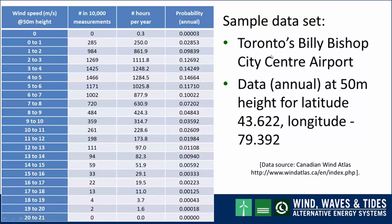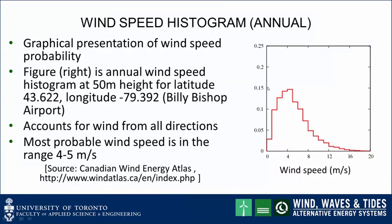This particular data set is for Toronto's Billy Bishop City Centre Airport and is at 50 meter height rather than the usual 10 meter meteorological tower height. Wind speed probability data can be presented graphically. A plot of wind speed probability data is called a wind histogram. The figure to the right is the annual wind speed histogram at 50 meter height for Billy Bishop City Centre Airport. This wind speed probability distribution accounts for wind from all directions. The most probable wind speed — that is, the wind speed having the highest probability — is in the range of 4 to 5 meters per second, as illustrated by the circle.